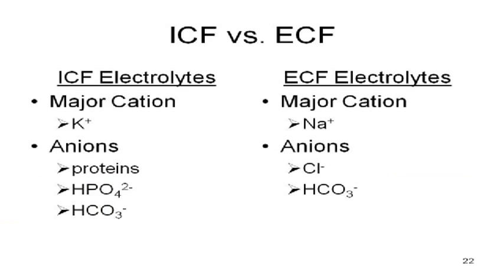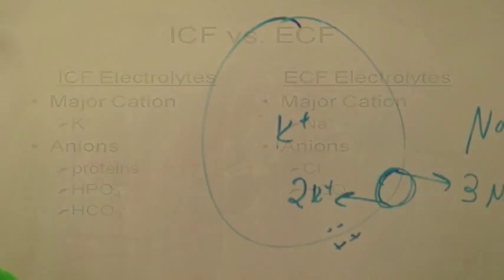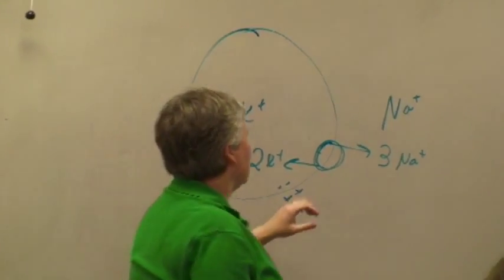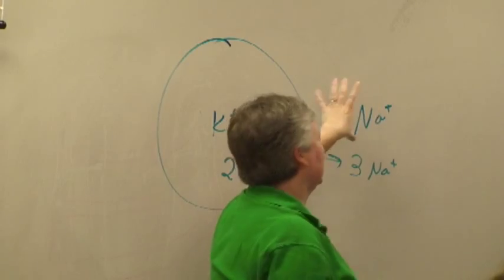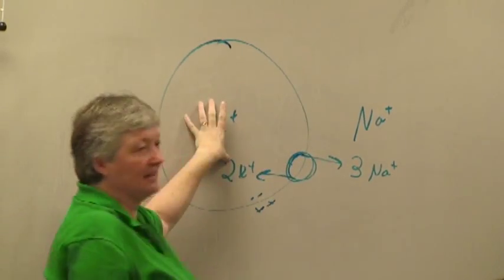One of the things I need to reemphasize is that inside the intracellular fluid, inside your cells, the major cation is potassium. In the extracellular fluid, the major cation — the positively charged ion — is sodium. So you have lots and lots of sodium in your extracellular fluid, and lots and lots of potassium in the intracellular fluid.